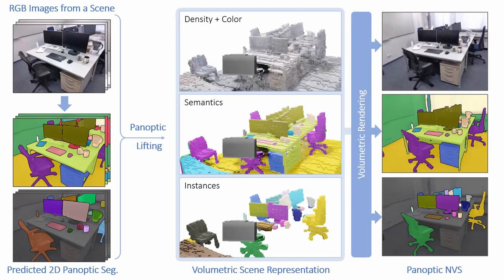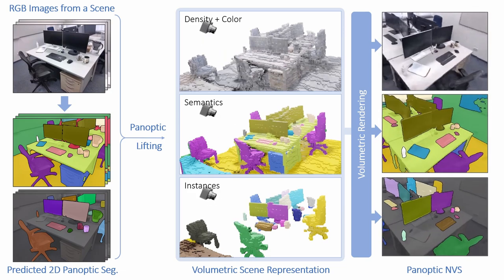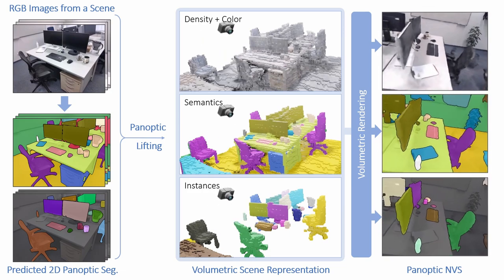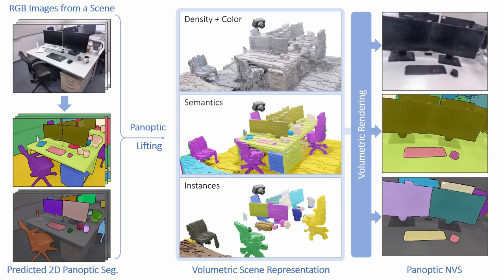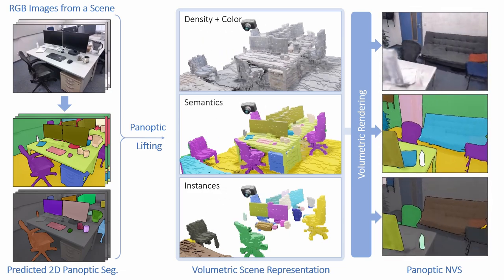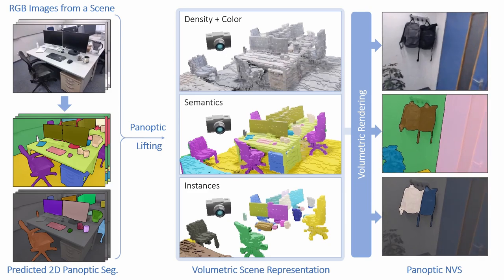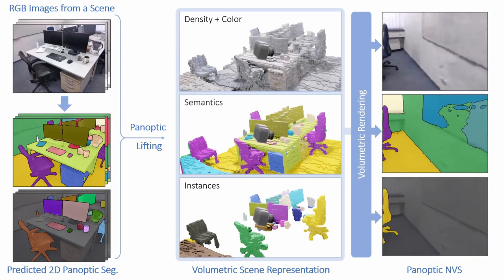Given only RGB images of a scene, we first preprocess the images to obtain poses and machine-generated 2D segmentations using an off-the-shelf model. We then optimize a volumetric neural scene representation that can be queried for the color, density, semantic, and instance labels for each point in space.